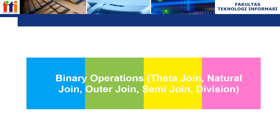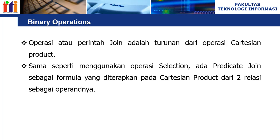Kita masuk ke pembahasan pertama tentang binary operation yang terdiri dari theta join, natural join, outer join, semi join, dan division. Binary operation adalah operasi atau perintah. Join ini adalah turunan dari operasi Cartesian product, sama seperti menggunakan operasi selection. Ada predicate join sebagai formula yang diterapkan pada Cartesian product dari dua relasi sebagai operannya.